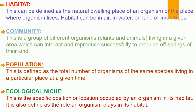The second concept is habitat. Habitat is defined as the natural dwelling place of an organism, or the place where an organism lives — the home of an organism. There are two types of habitats: aquatic habitats and terrestrial habitats. Some organisms live inside water and some live on land. Habitats can be in air, in water, on land, or even in or on trees.